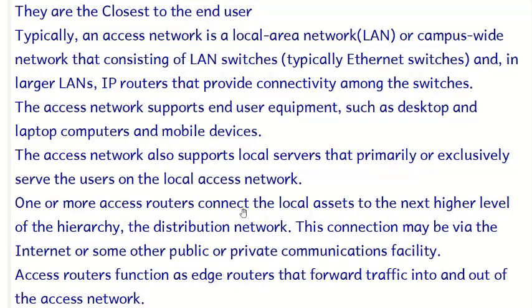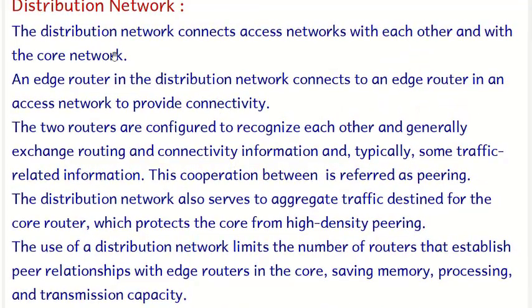One or more access routers connect local assets to the higher level of the hierarchy — the distribution network. This connection may be through the internet or some other public or private communication facility. Access routers function as edge routers when connecting from one level to another. The distribution network connects access networks with each other and with the core network.